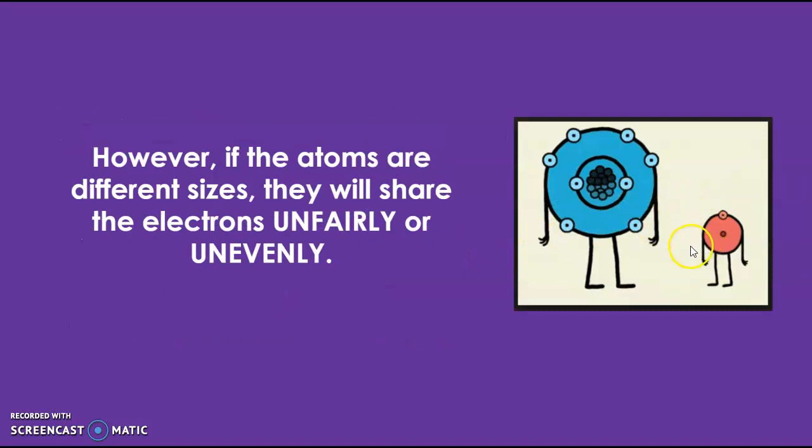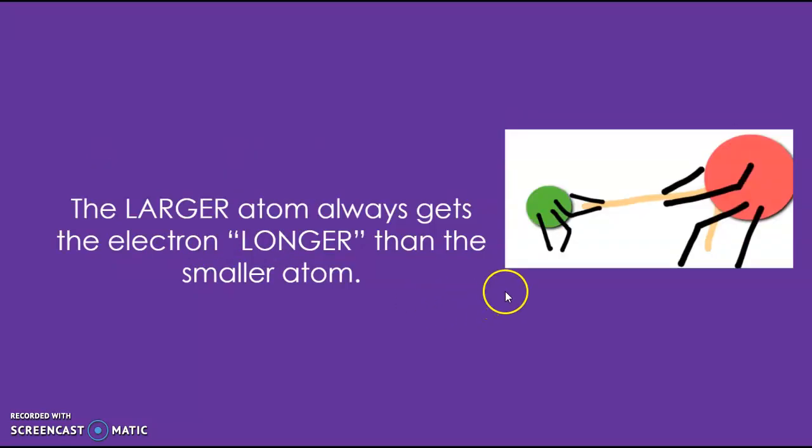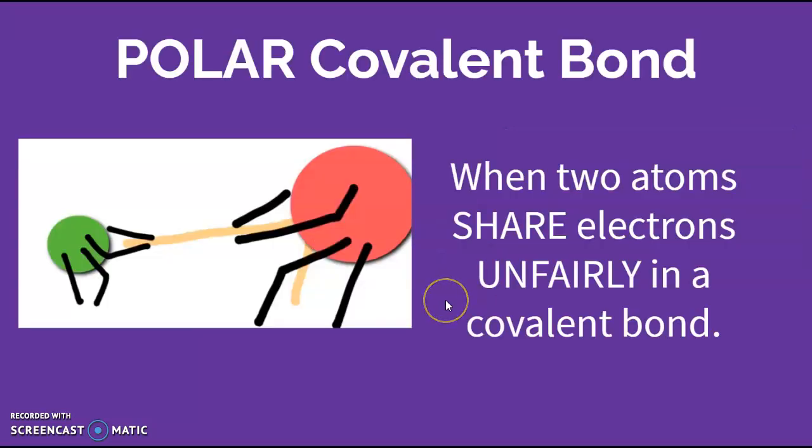However, if the atoms are different sizes—and this happens all the time with hydrogen—the electrons actually get shared unfairly, meaning the larger atom gets the electrons for longer than the smaller atoms, winning the tug of war with the electrons.